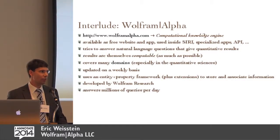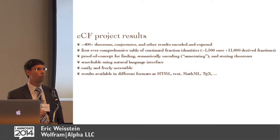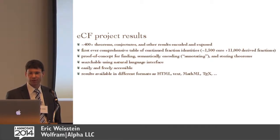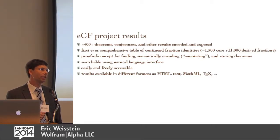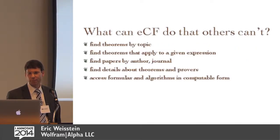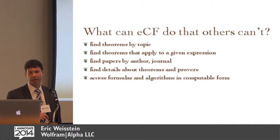Wolfram Alpha uses an entity-property framework to represent all its data, and it uses a number of custom curated databases. In the ECF project, we managed to semantically encode about 400 different theorems, conjectures, and results. We made a comprehensive table of identities. We think this is a proof of concept for how you could actually go about semantically encoding part of mathematics, providing new ways to search using that semantic encoding and discover relationships between things. It's live, freely accessible, on Wolfram Alpha right now, and it can do a number of things that traditional ways of searching the math literature can't.